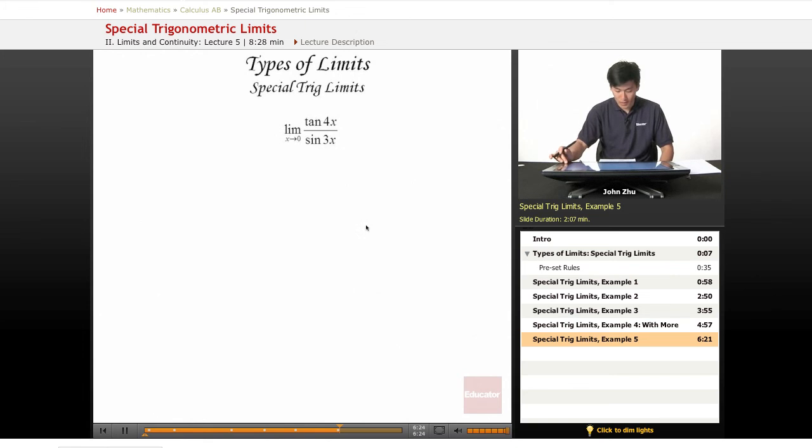Now we have a tangent over a sine. We can always split up a tangent expression into a sine over cosine expression to simplify everything.